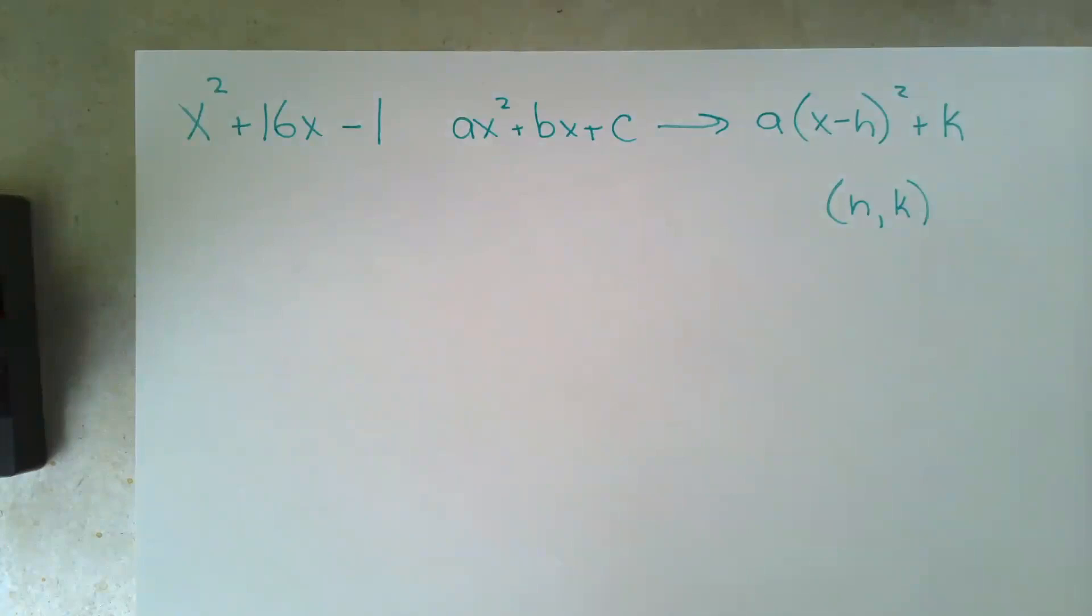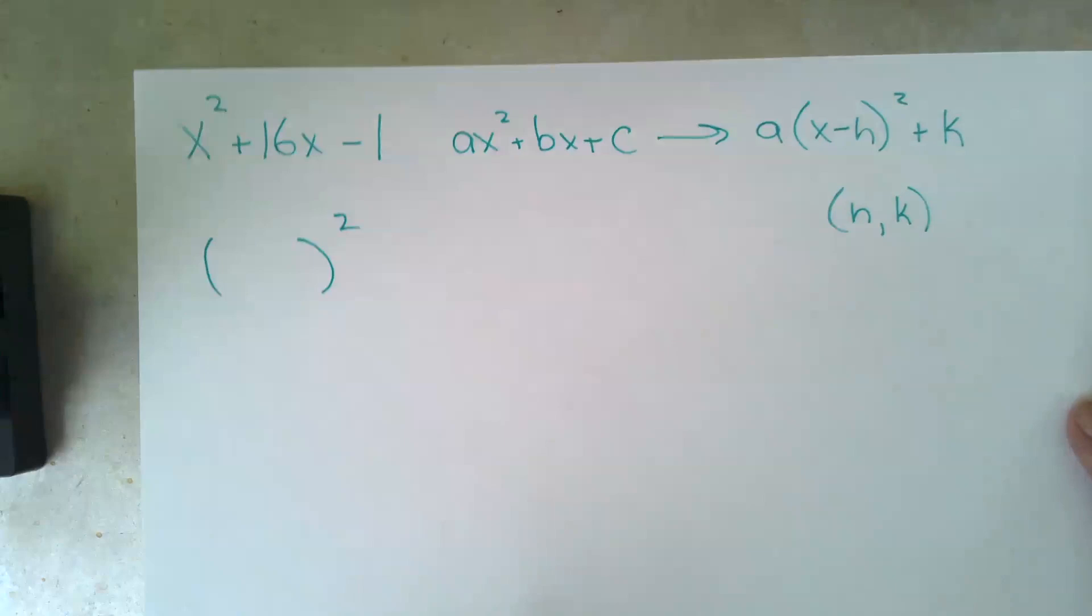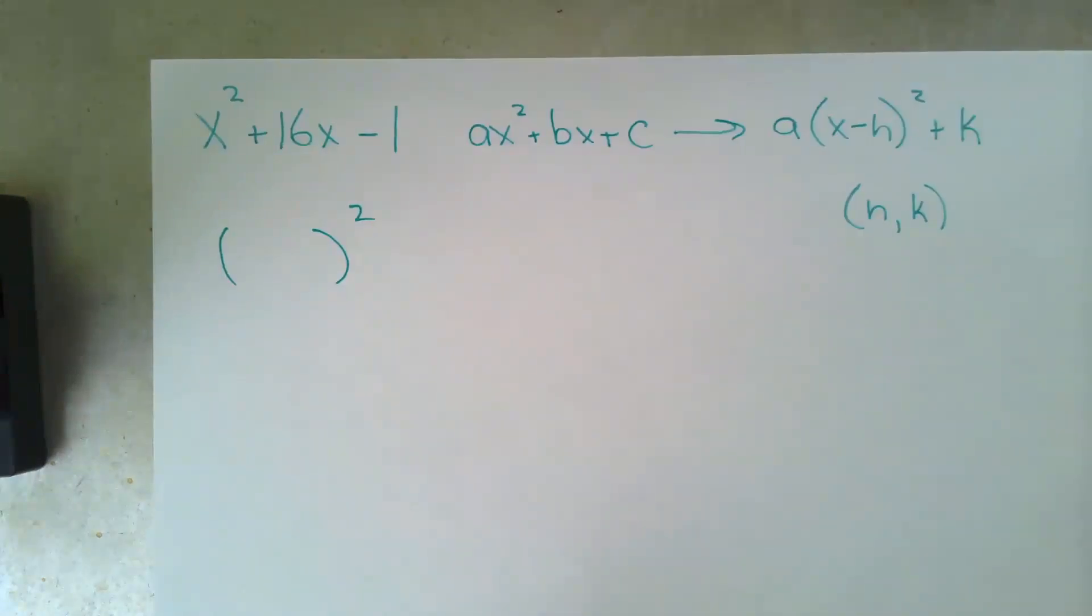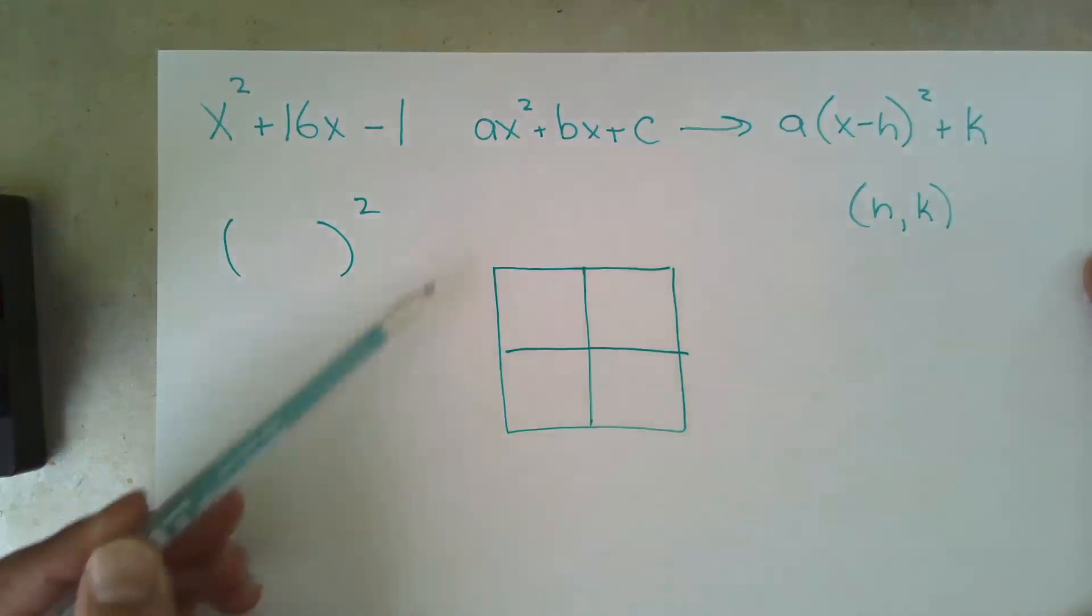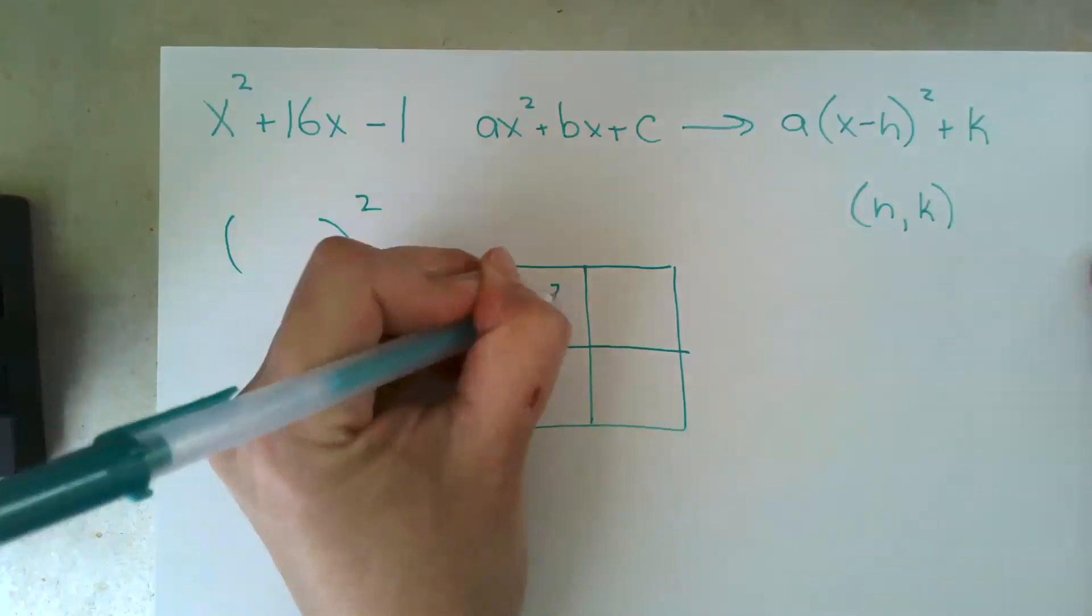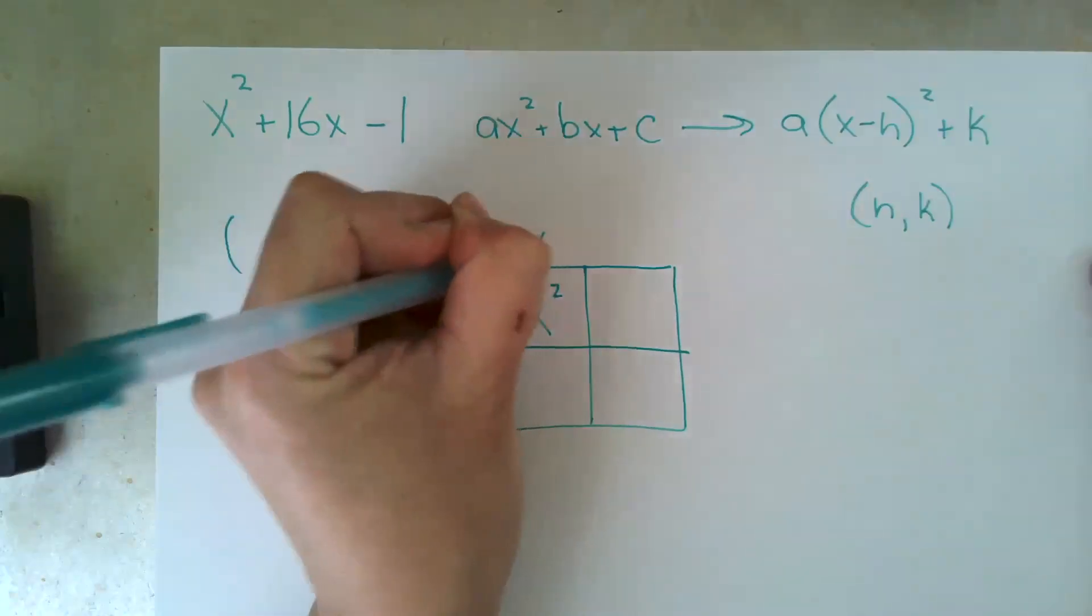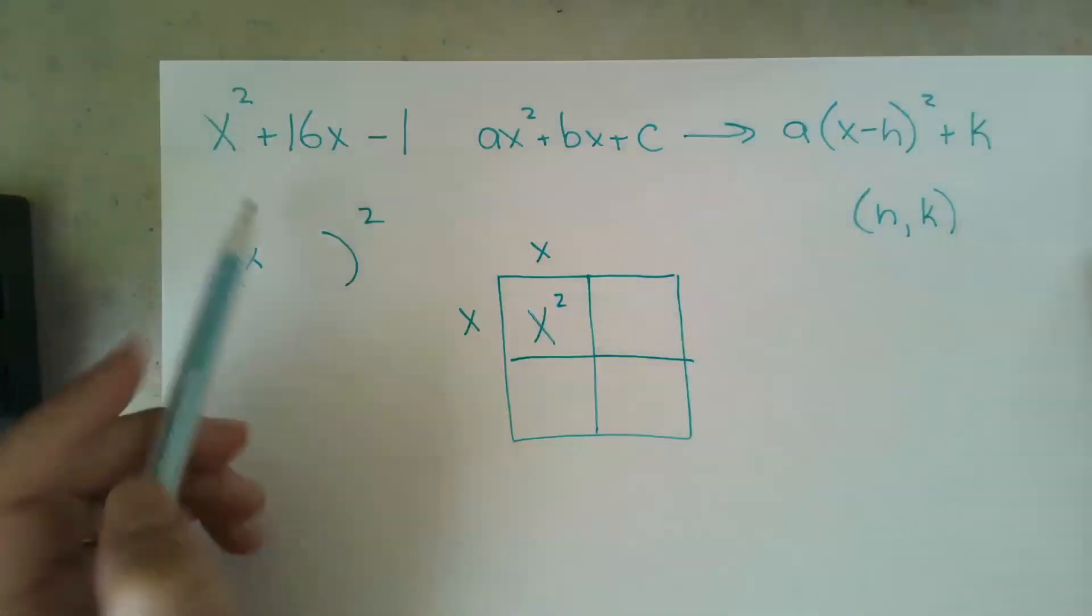To do this, we want to convert our standard form into a perfect square. So we're going to create a two by two multiplication matrix where we're looking to have the same x minus h times x minus h that will become r squared. So we know our first term is an x squared, and so that means that the first thing inside our parentheses is an x, right? There's our x squared.